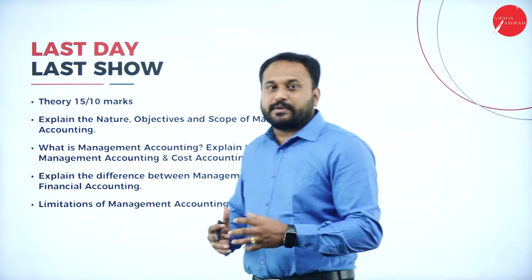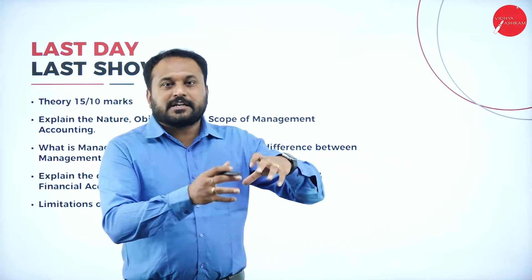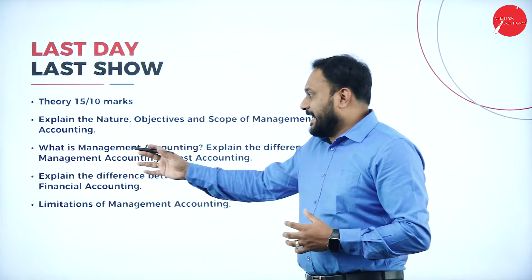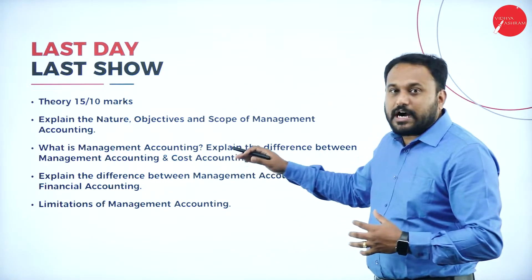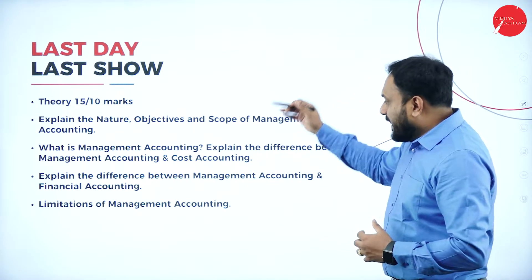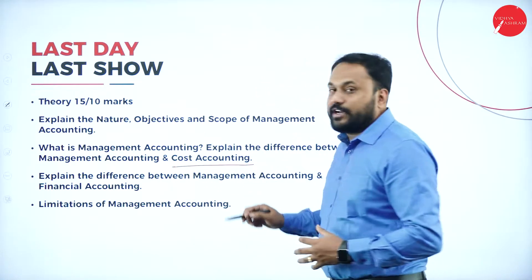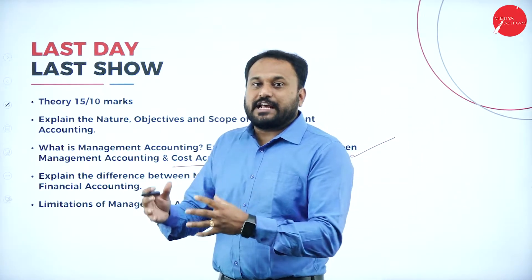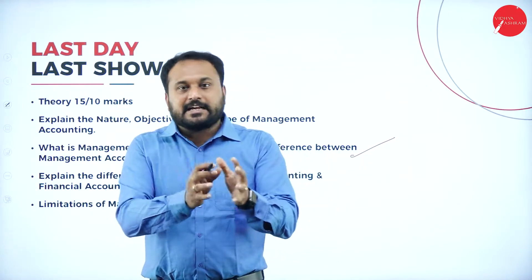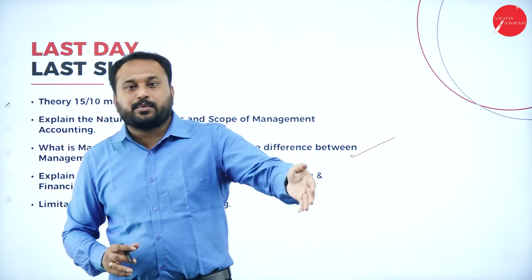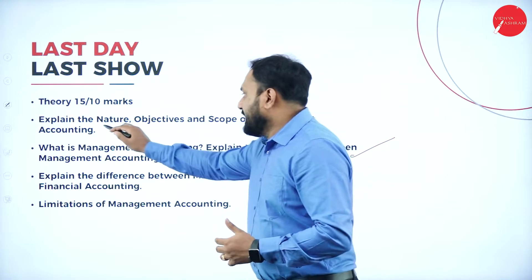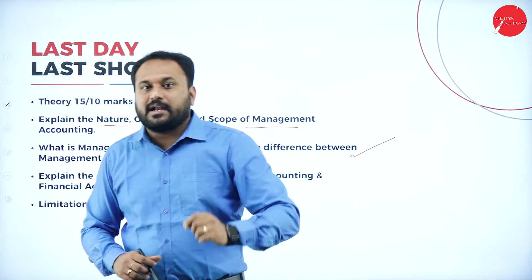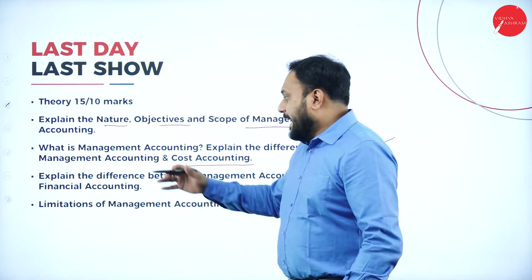If you cover nature, objective, and scope, break the question as 5 marks for nature, 5 marks for objective, and 5 marks for scope. The next question to prepare is: explain the difference between management accounting and cost accounting, or explain the difference between management accounting and financial accounting. These are the two 15-mark questions from the first chapter. If you prepare both, you are ready.